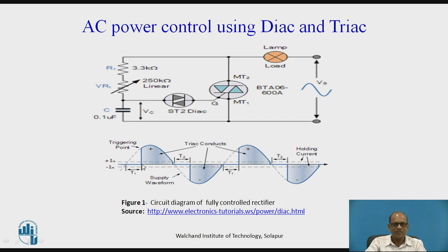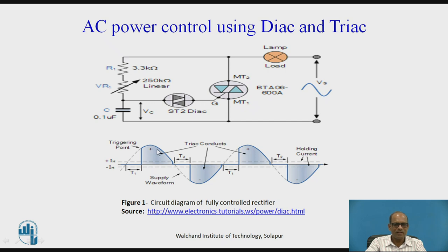Once TRIAC conducts, it will continue to conduct till the current through the TRIAC becomes less than the holding current, as shown in the figure. Since the load is a lamp, which is a resistive load, the waveform for load current and load voltage are in phase. At the point where current through the TRIAC becomes less than the holding current, TRIAC becomes OFF, and after zero crossing of the line, the negative half cycle of the input starts.